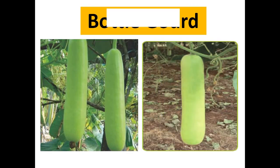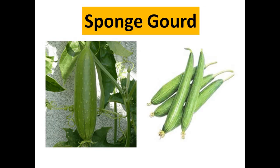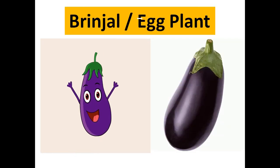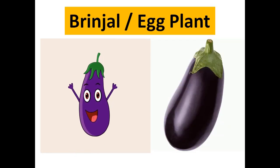Loki ko hum English mein 'bottle gourd' kaha jata hai. Gilkhi ko hum English mein kehte hain 'sponge gourd.' Bangan ko hum English mein 'brinjal' ya 'eggplant' kehte hain — donon mein se koi bhi ek choose kar sakte hain.